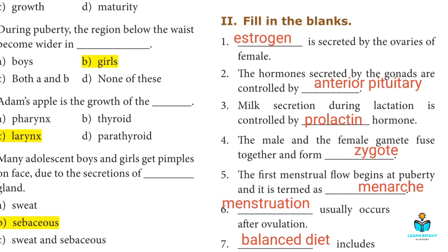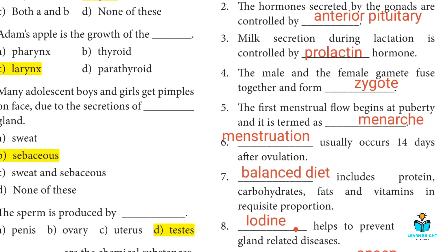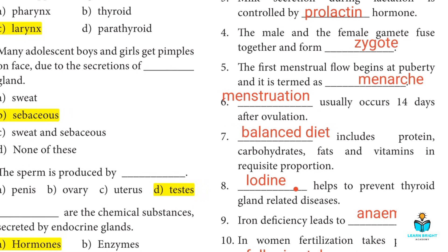Fourth: The male and female gamete fuse together and form a zygote. Fifth: The first menstrual flow begins at puberty and it is termed menarche. Sixth: Menstruation usually occurs 14 days after ovulation.